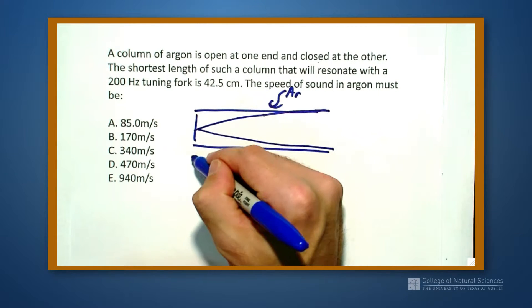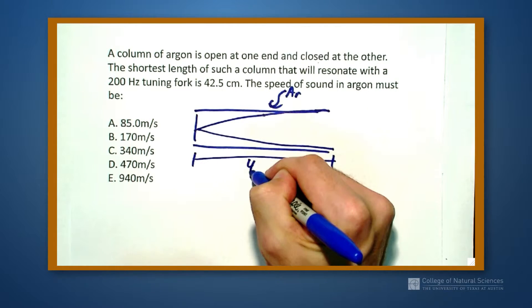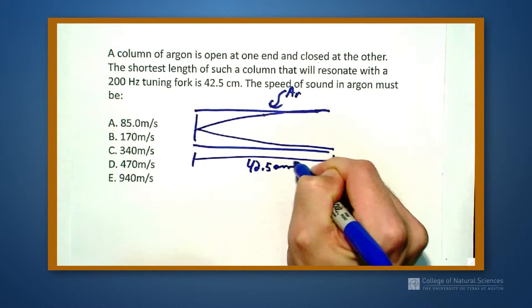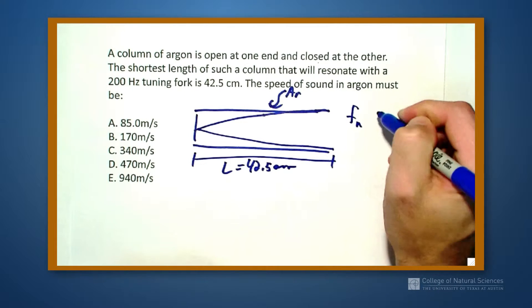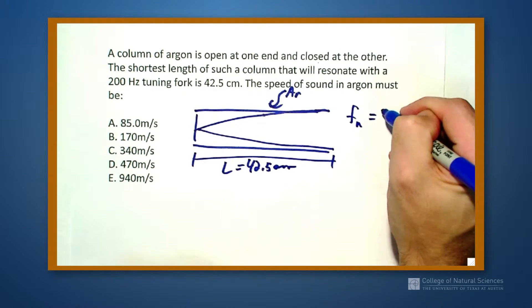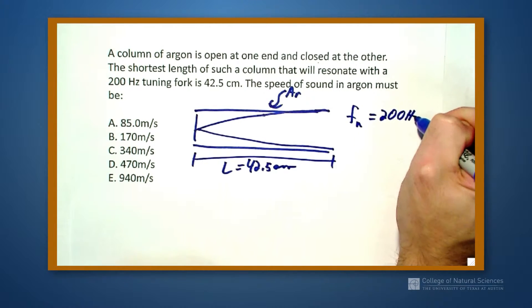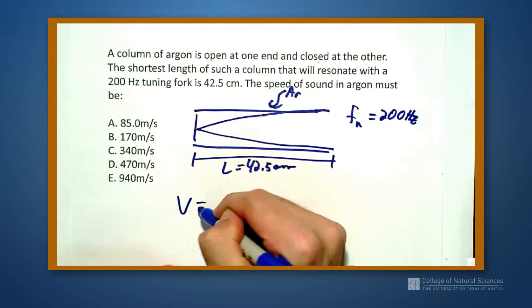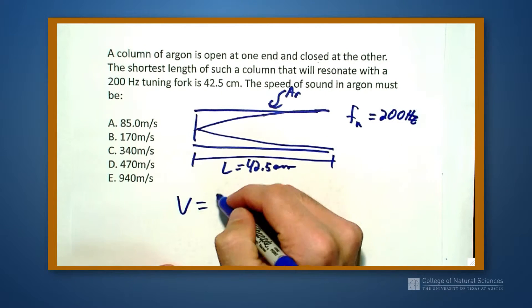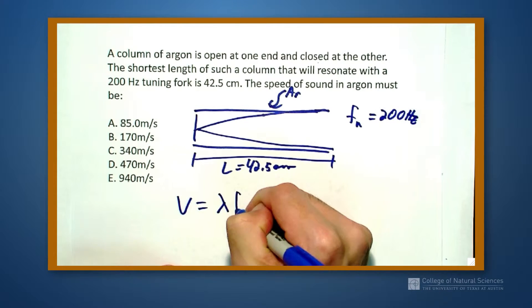So this length right here, 42.5 cm, is equal to L, and I know that the frequency that I get out of this is going to be 200 hertz, and this is actually my lowest fundamental frequency. I want to know what is my speed of sound. Well, the ultimate equation that I need to use is frequency times wavelength is going to give me my velocity.